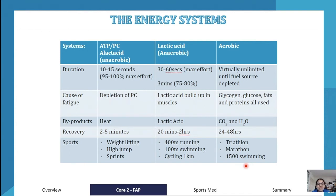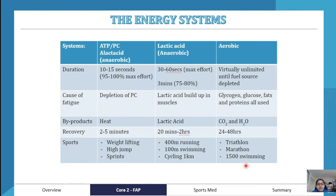The causes of fatigue: in the ATP-PC system, fatigue occurs once creatine phosphate runs out. In the lactic acid system, fatigue is due to lactic acid building up in the muscles — for example, that burning sensation in your quads during a wall sit. In the aerobic system, fatigue occurs when glycogen, glucose, fats, and proteins are all used up. Byproducts are: heat and sweat (ATP-PC), lactic acid (lactic acid system), and carbon dioxide and H2O (aerobic).